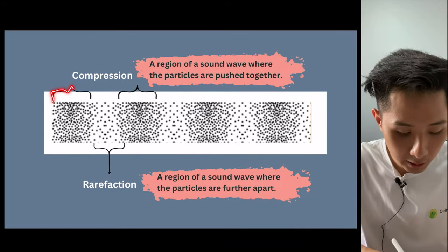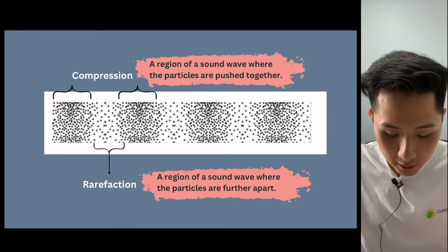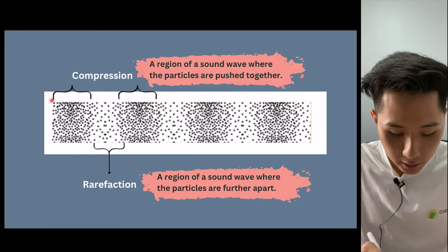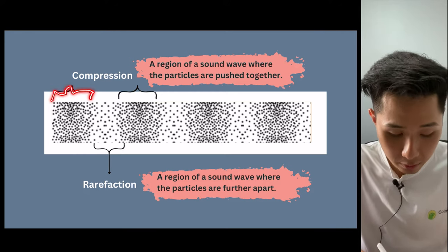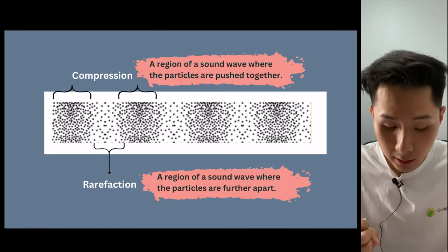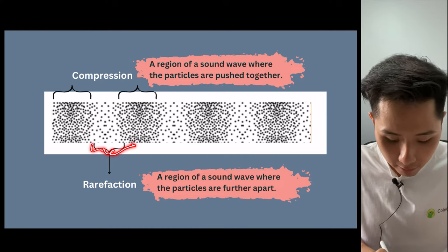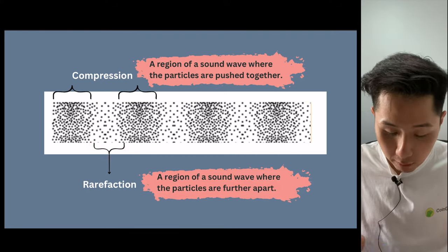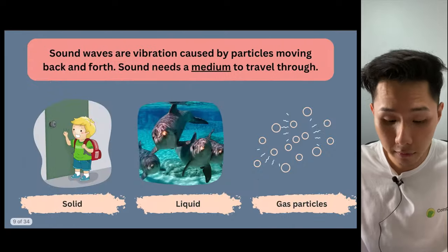I just wanted you to see this part of the graph here. The first part is called compression. It is a region of a sound wave when all the particles are being pushed together. Whereas the other part is rarefaction. It's a region of a sound wave where these particles are further apart from each other.